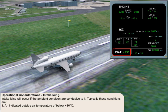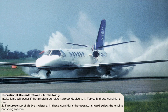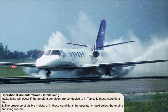Intake icing will occur if the ambient conditions are conducive to it. Typically these conditions are: 1. An indicated outside air temperature of below plus 10 degrees Celsius, and 2. The presence of visible moisture — that is fog or any form of precipitation — or alternatively standing water on the runway, or if the RVR is less than 1,000 meters. In these conditions the operator should select the engine anti-icing system.